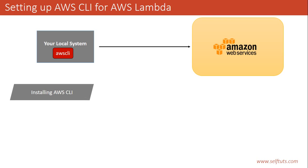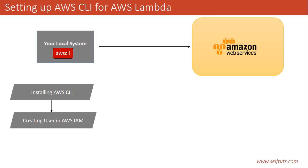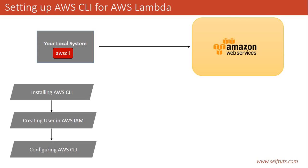The first step is to install the AWS CLI, and then we need to create a user in AWS IAM. IAM is the Identity and Access Management service which AWS provides. We can create users there and attach policies to them, so the user is authorized to perform actions on a particular AWS service based on their permissions. We need to create a user in IAM, provide roles or policies to that user, and using that user you can interact via AWS CLI with Amazon Web Services remotely. The third step is to configure the AWS CLI. We'll see all three steps one by one.